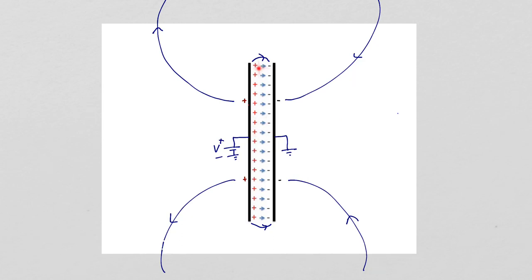So for maybe 99% of the charge on the capacitor, the resulting electric field lines are these horizontal lines between the plates.